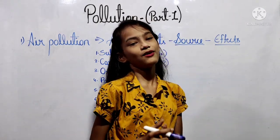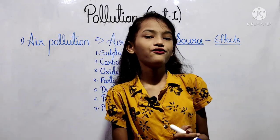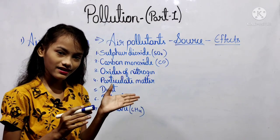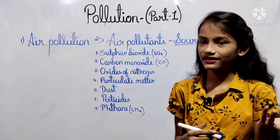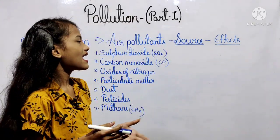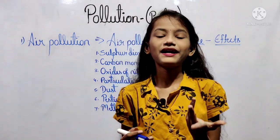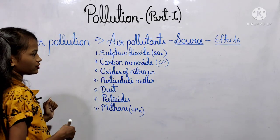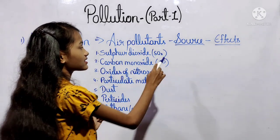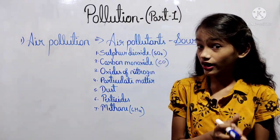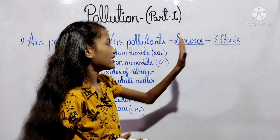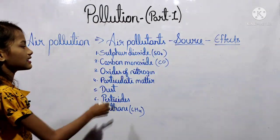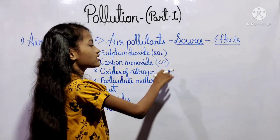Now we will see about air pollutants, their sources and effects. The first air pollutant is sulfur dioxide (SO₂). Its source is factories where coal and mineral oil are used as fuel. Its effects include irritation of the eyes, respiratory tract, excess mucus, and cough.